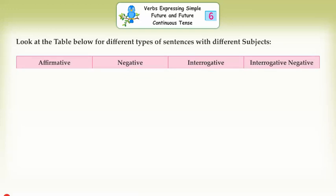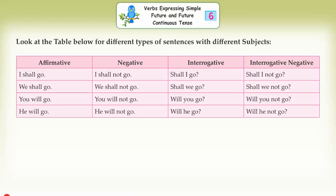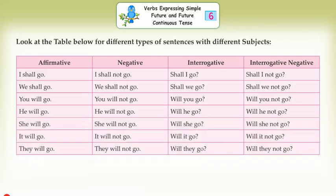Affirmative, Negative, Interrogative, Interrogative Negative. I shall go. I shall not go. Shall I go? Shall I not go? We shall go. We shall not go. Shall we go? Shall we not go? You will go. You will not go. Will you go? Will you not go? He will go. He will not go. Will he go? Will he not go? She will go. She will not go. Will she go? Will she not go? It will go. It will not go. Will it go? Will it not go? They will go. They will not go. Will they go? Will they not go?